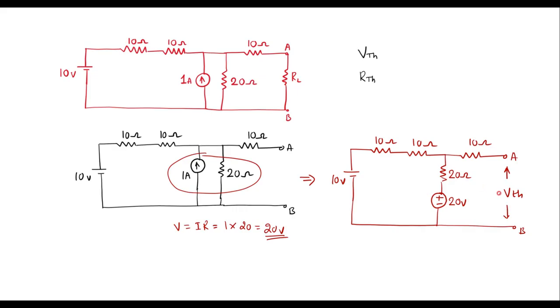In this circuit, we can observe that the voltage across terminal A and B is the same as the voltage between this point and this point. Since this 10 ohm resistor is open, no current flows through it. Therefore, voltage at terminal A and B is the same as the voltage at those two points. There is only one loop. Let me find the current in this loop. I will assume current through this loop is I, and apply KVL.